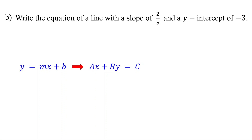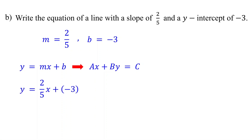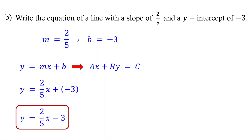Start by identifying the slope and y-intercept. The slope is 2 fifths and the y-intercept is negative 3. Next, substitute these values into the equation — replace m with 2 fifths and b with negative 3. Remember, adding a negative number is the same as subtracting the positive version of that number. This is your equation in slope-intercept form.